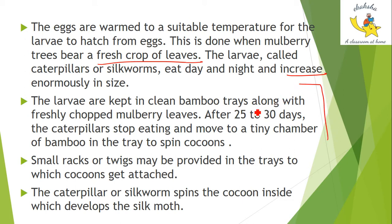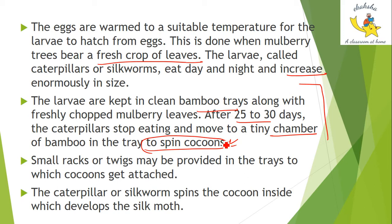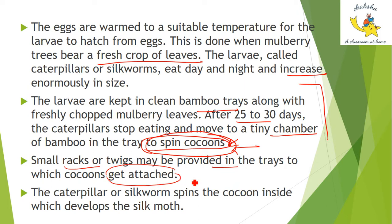When food is closed, the caterpillars are placed in a bamboo tray with small cavities. After 25 to 30 days, the caterpillars stop eating and move to a tiny chamber of bamboo in a tray to spin cocoons. They need silk — they start making silk and form their cocoons.